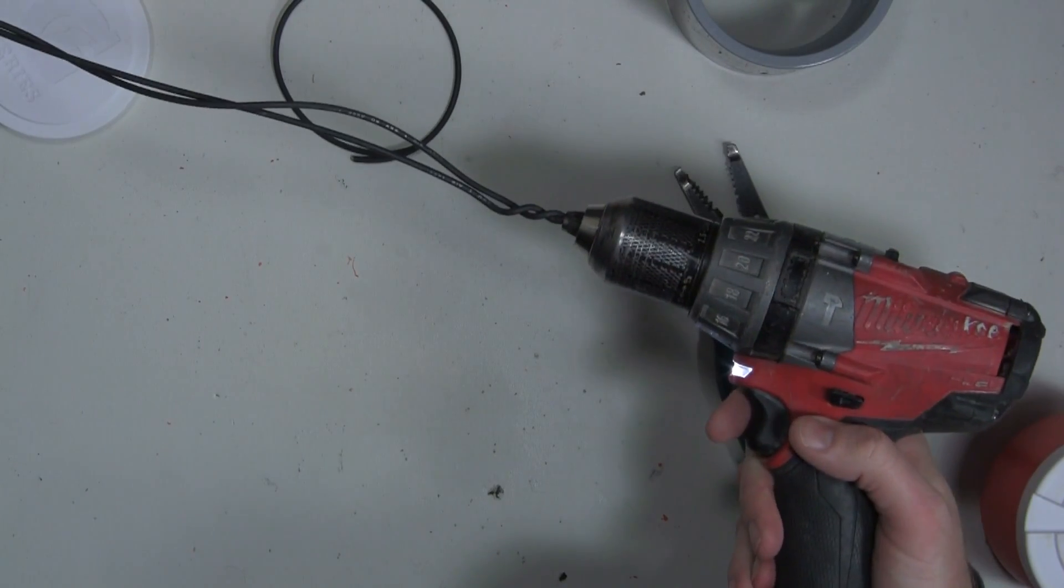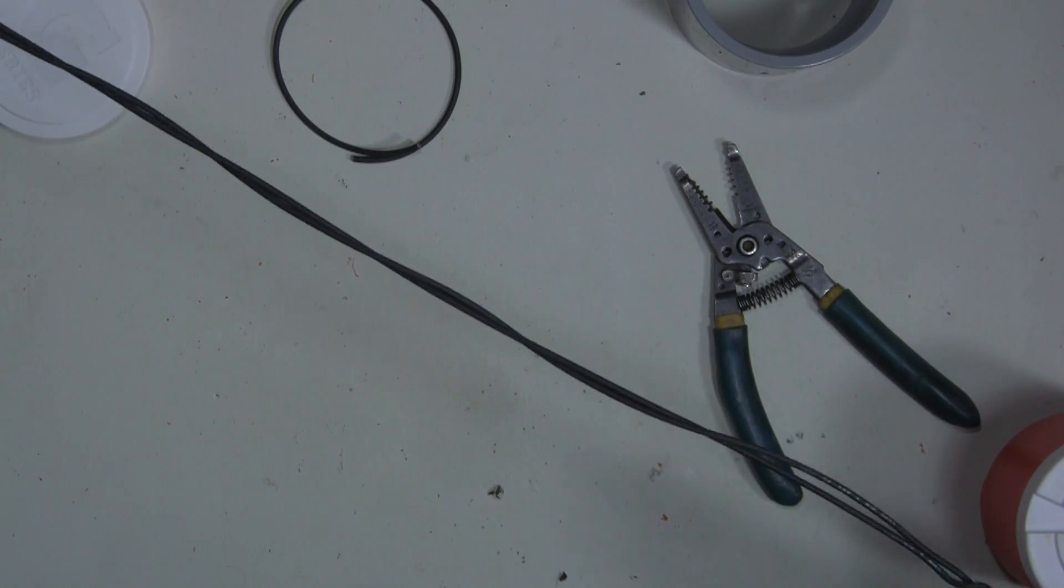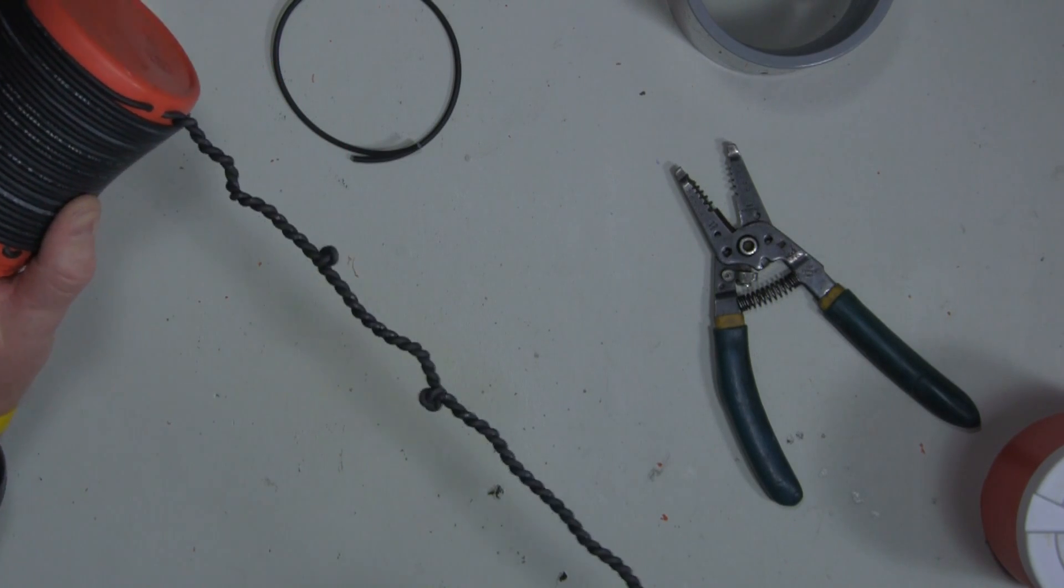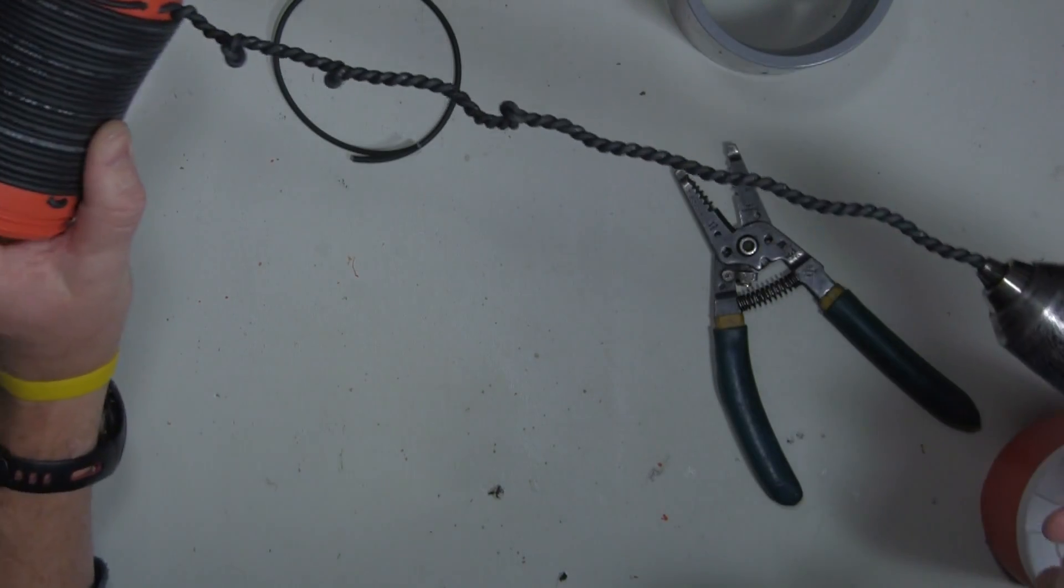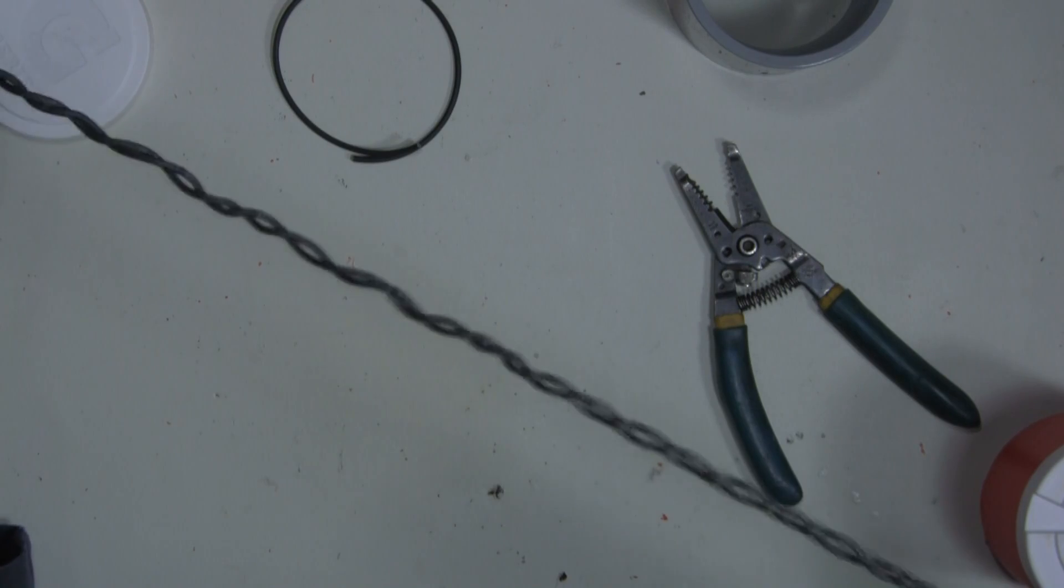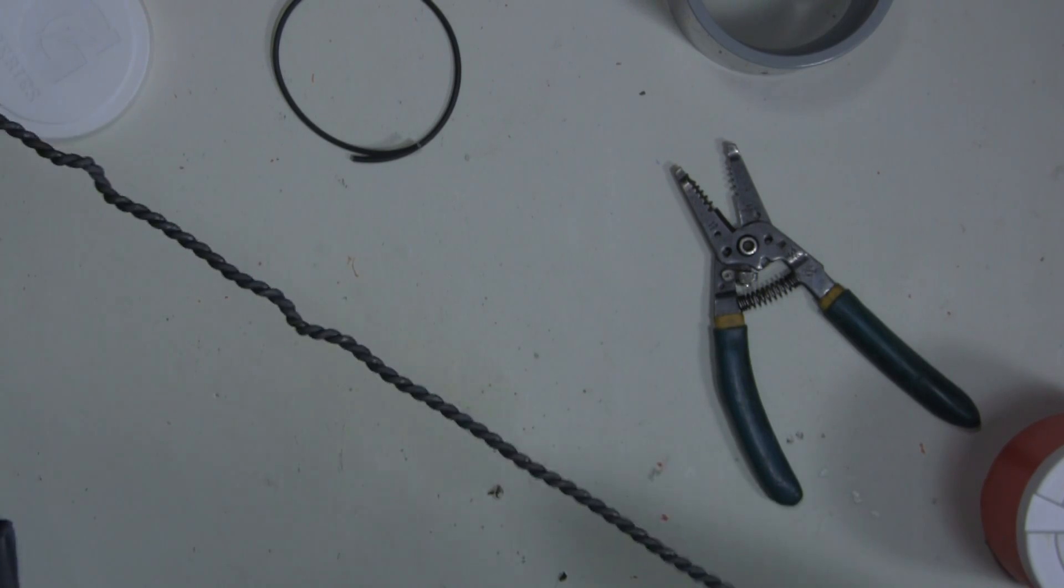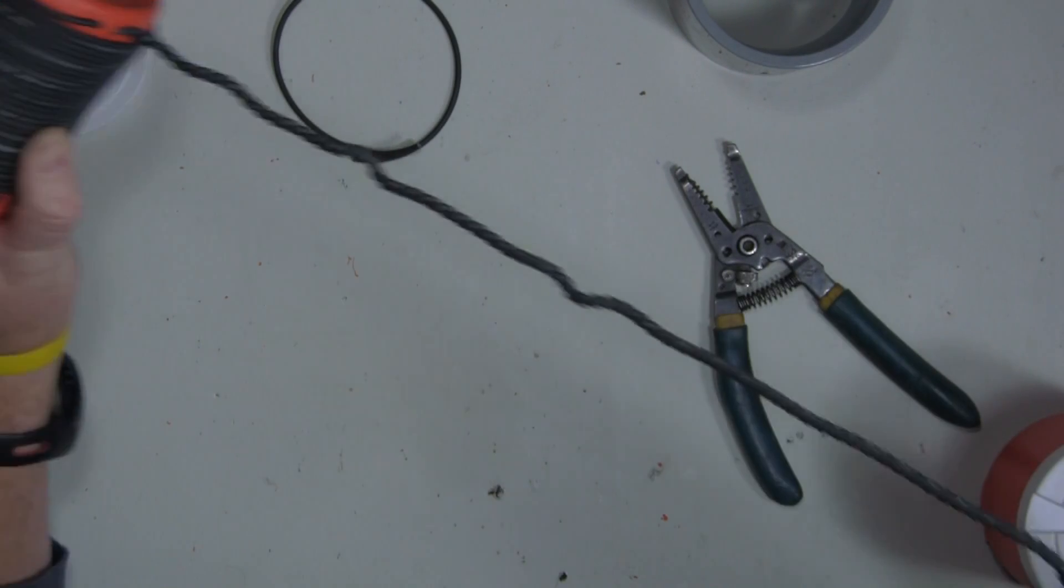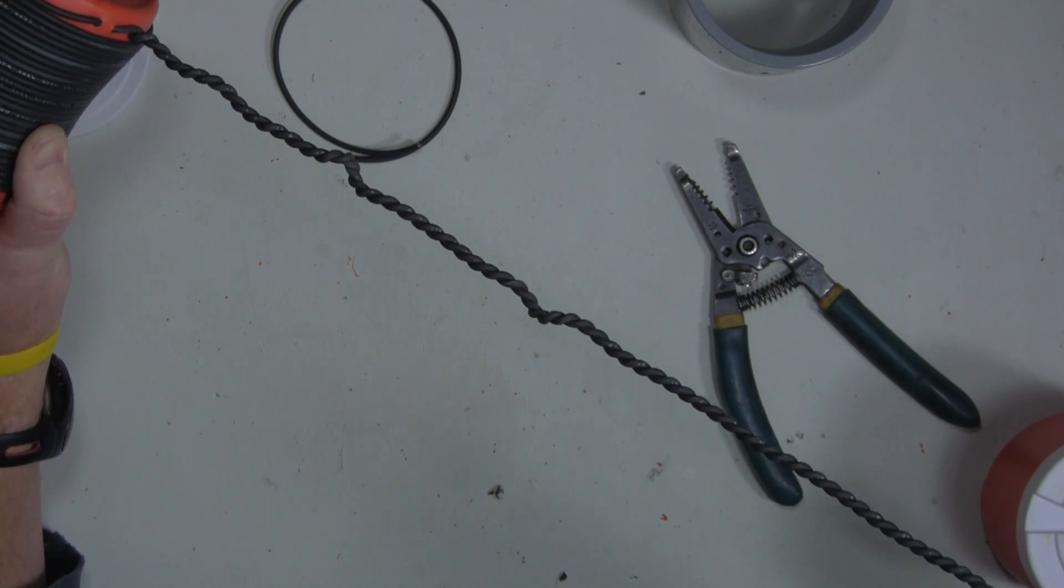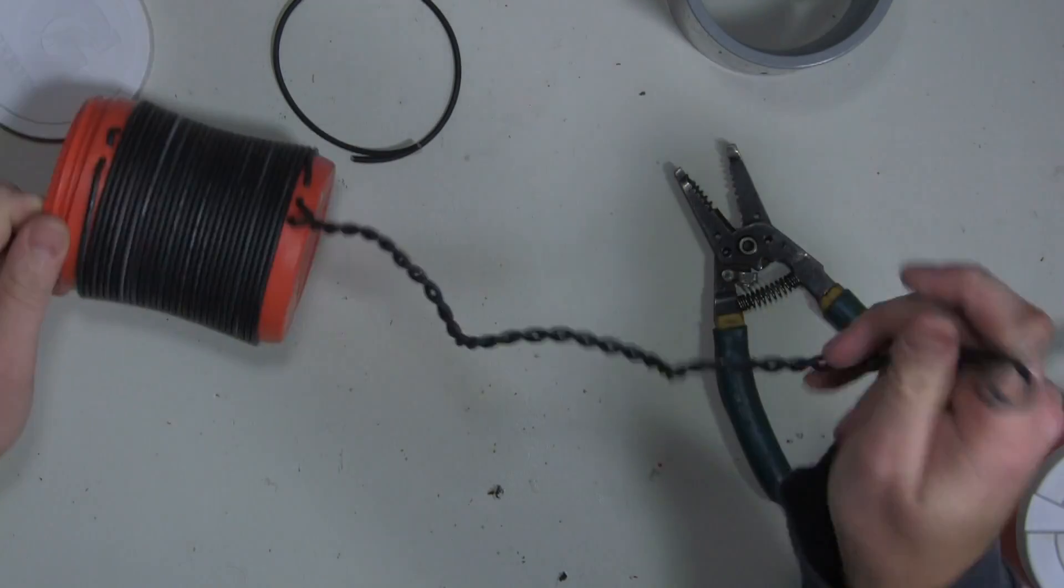And then just take the excess and put it in your drill. And then you can just spin it. And you see how it's kinking up there in the middle? Just release a little bit. And all I'm doing is kinking those wires so they stay together a little bit naturally. You can use zip ties to keep them together, but I'll just do this.